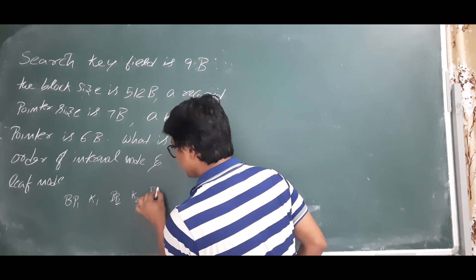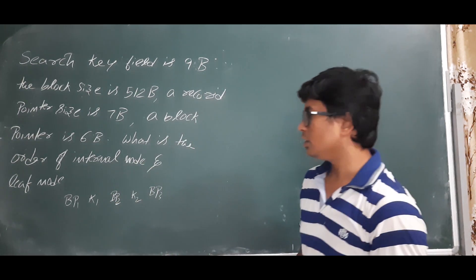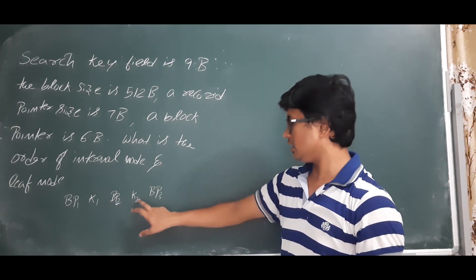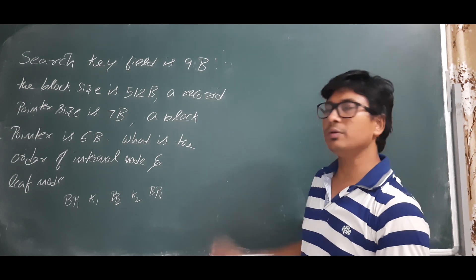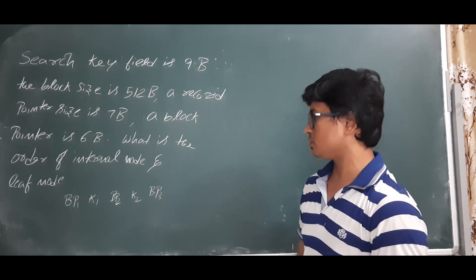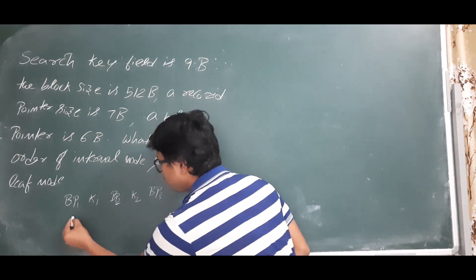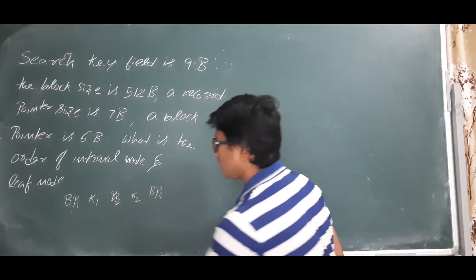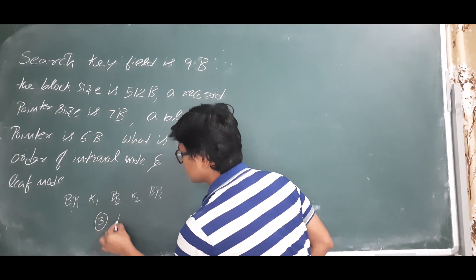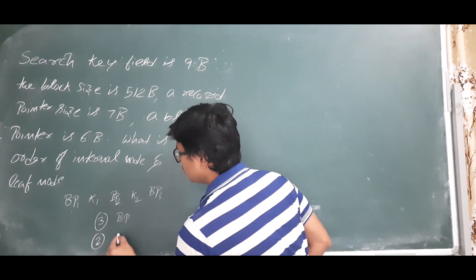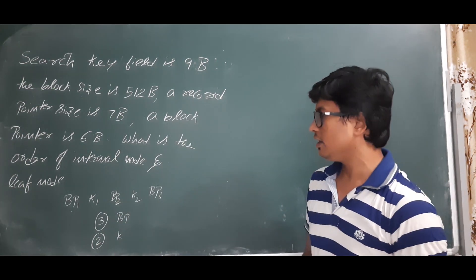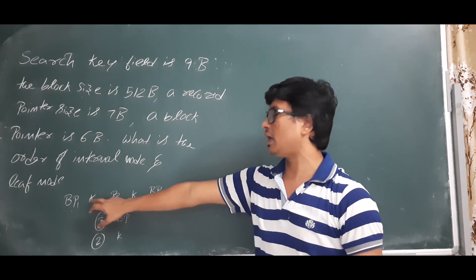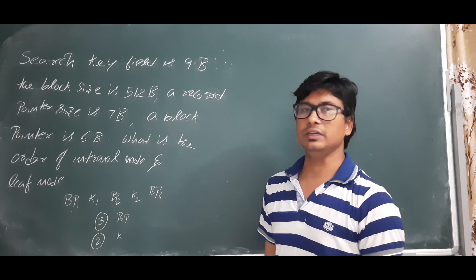The structure of an internal node consists of: block pointer, key, block pointer, key, block pointer, and so on, ending with a block pointer. So if you have three block pointers, you will have two keys. In general, if you have n block pointers in an internal node, you will have n minus one keys.